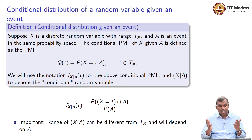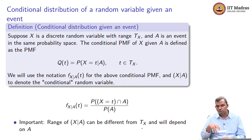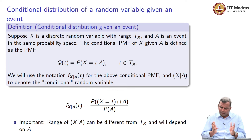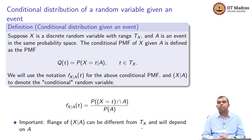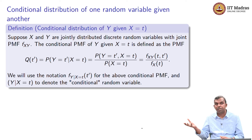Pay attention to the fact that the range of X given A can be different from the range of X, because once you condition on A, X may not be able to take many values outside of A. So the range can change. Sometimes people do condition on events, but it is most popular to condition on events defined by another random variable — that is where the conditional distribution of one random variable given another random variable's value enters the picture.